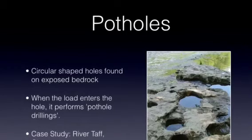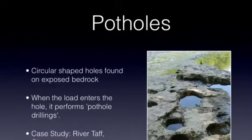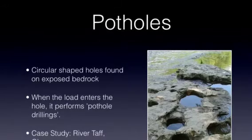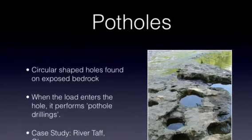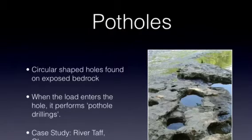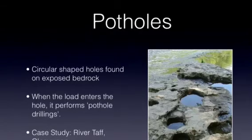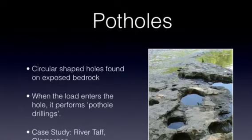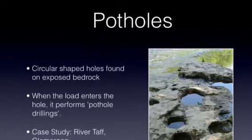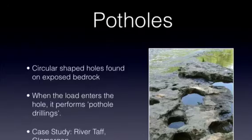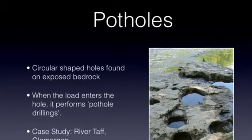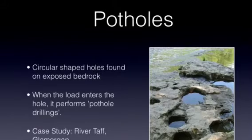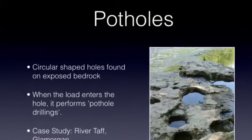Potholes are round circular shaped holes on exposed bedrock found in the upper course of a river. Eddying and turbulent flow, carrying a load, gets inside these holes. Sediment accumulates within naturally occurring small depressions on the rock surface on the riverbed. Turbulent flow swirls the stones around in these depressions and therefore widens and deepens them through the prolonged process of abrasion, acting as a grindstone.